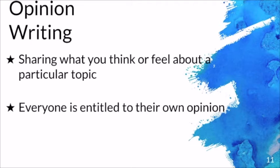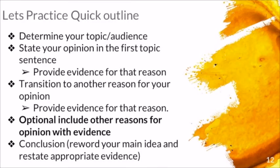When sharing your opinion in writing, you want to make sure through word choice that your reader understands your position. For the outline: determine your topic and audience, state your opinion in the first topic sentence, provide evidence for that reasoning. Then transition to another reason for your opinion and provide evidence for that reason. You can include another reason with evidence, or transition to your conclusion where you reword your main idea and restate appropriate evidence.